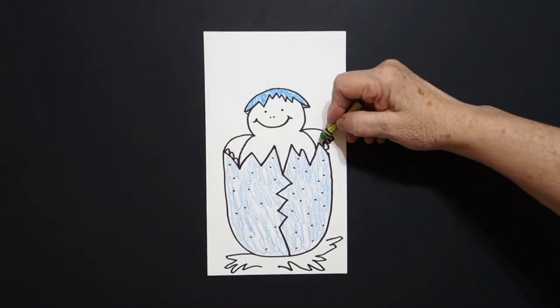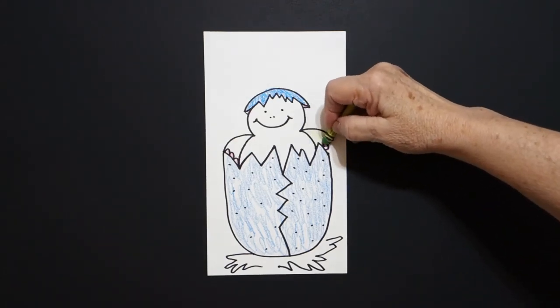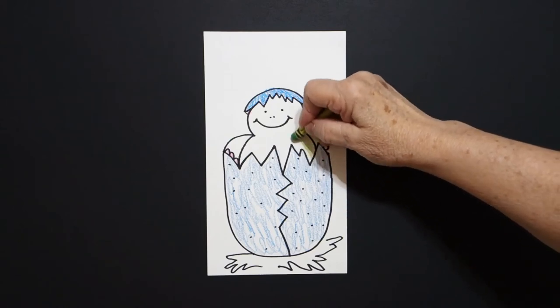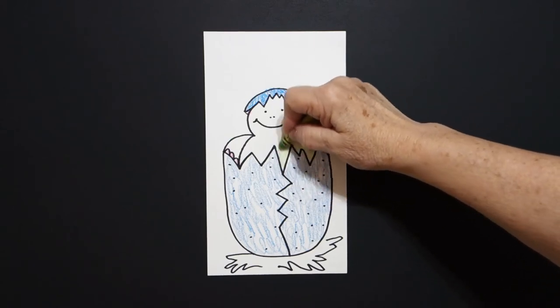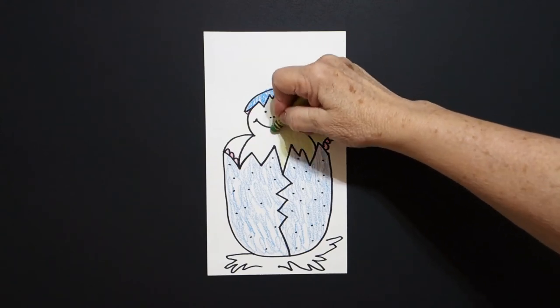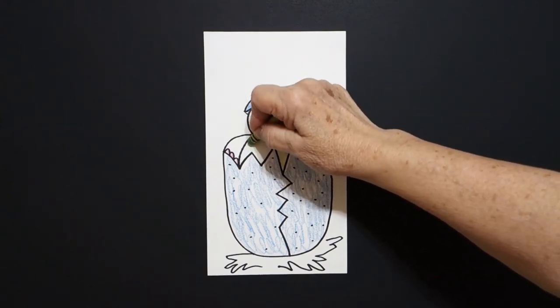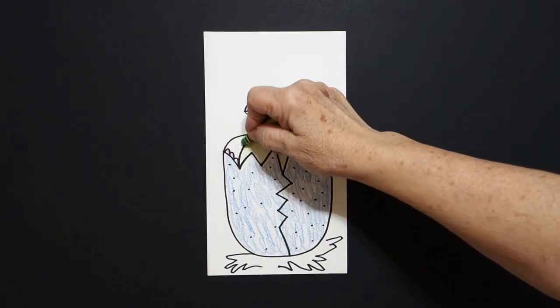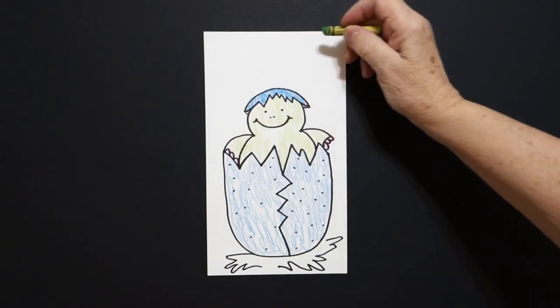Next I took yellow green and I loop-de-loop this entire space. All the way up down and over okay.